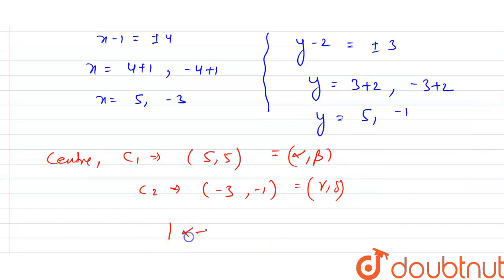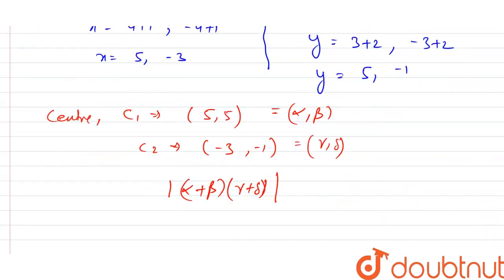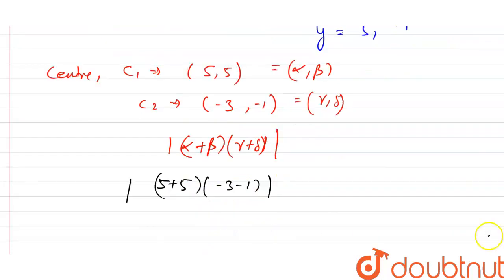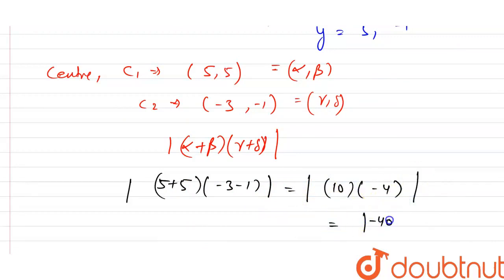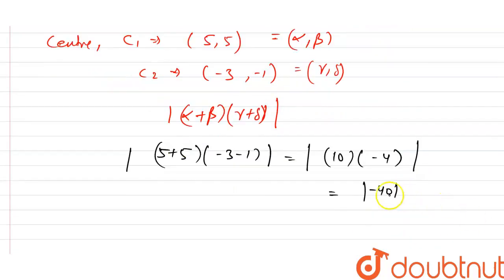हमें value पूछी गई है |(α + β)(γ + δ)|। Values put करेंगे: |(5 + 5)(−3 + (−1))| = |10 × (−4)| = |−40| = 40। यही हमारा answer है। Thank you.